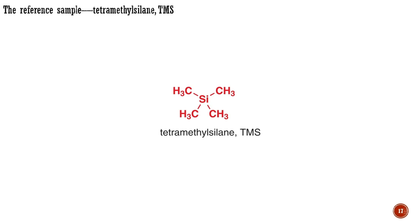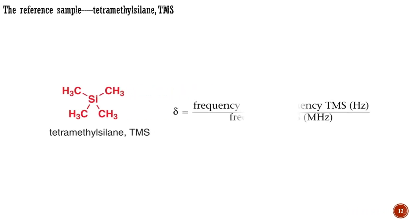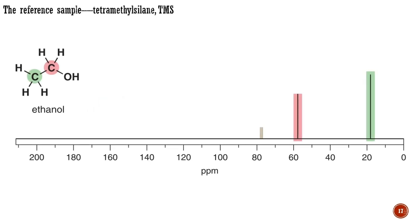The chemical shift delta in parts per million of a given nucleus in our sample is defined in terms of the resonance frequency by a specific equation. No matter what the operating frequency of the NMR machine, the signals in a given sample will always occur at the same chemical shifts. In ethanol, the carbon attached to the OH resonates at 58 ppm, whilst the carbon of the methyl group resonates at 18 ppm. By definition, TMS itself resonates at 0 ppm. The carbon nuclei in most organic compounds resonate at greater chemical shifts, normally between 0 and 200 ppm.